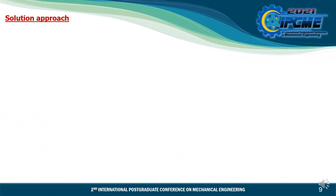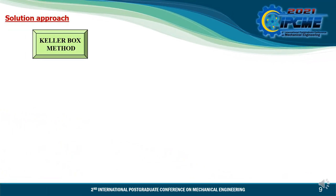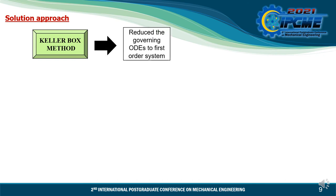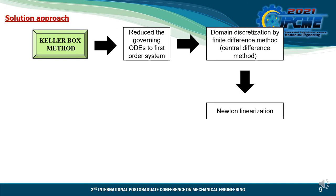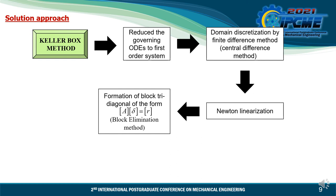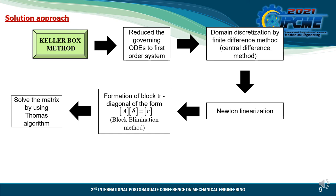For the solution approach, we use the Keller-box method to solve the transformed equations using MATLAB software. Firstly, we reduce the governing ODEs into a first-order system by introducing new dependent variables. Next, we apply domain discretization by the finite difference method using the central difference scheme. Then we apply Newton's method to linearize the equations. We then form the block tridiagonal matrix using the block elimination method, and solve the matrix using the Thomas algorithm to obtain the results.